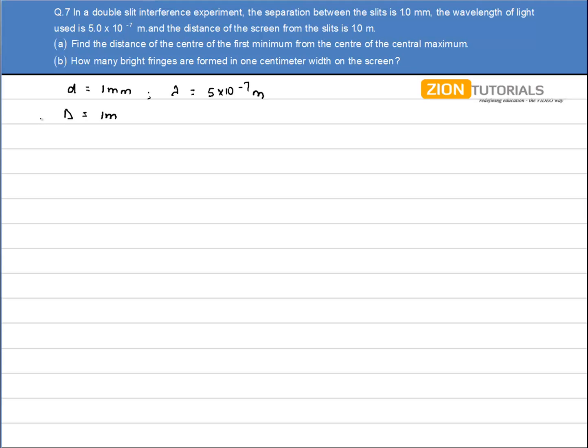We have to calculate the distance of the center of the first minima from the center of the central maxima. First of all, we calculate the fringe width. The reason why we are finding this fringe width will be clear later on.